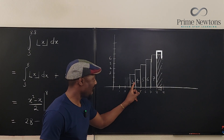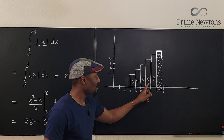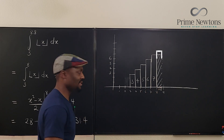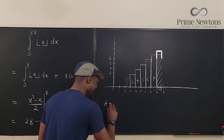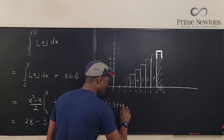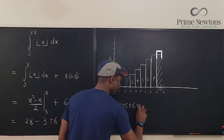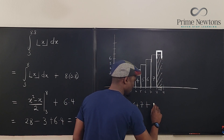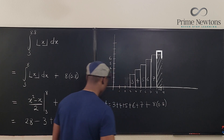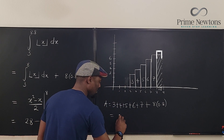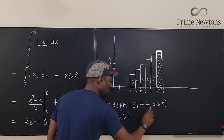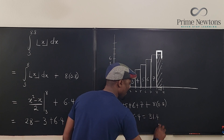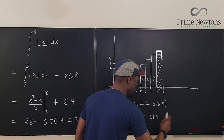So adding 3 plus 4 plus 5 plus 6 plus 7, plus the shaded area of 8 times 0.8, gives the total area. In practice: the area is 3 + 4 + 5 + 6 + 7 + 6.4, which equals 25 + 6.4, which is 31.4 square units.